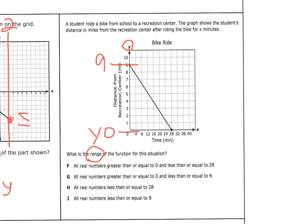H talks about 28. That's the domain. For letter G, it says all real numbers greater than or equal to 0 and less than or equal to 9. J just says all real numbers less than or equal to 9, which also includes negatives. In this case it does not go below 0, so our answer must be G.